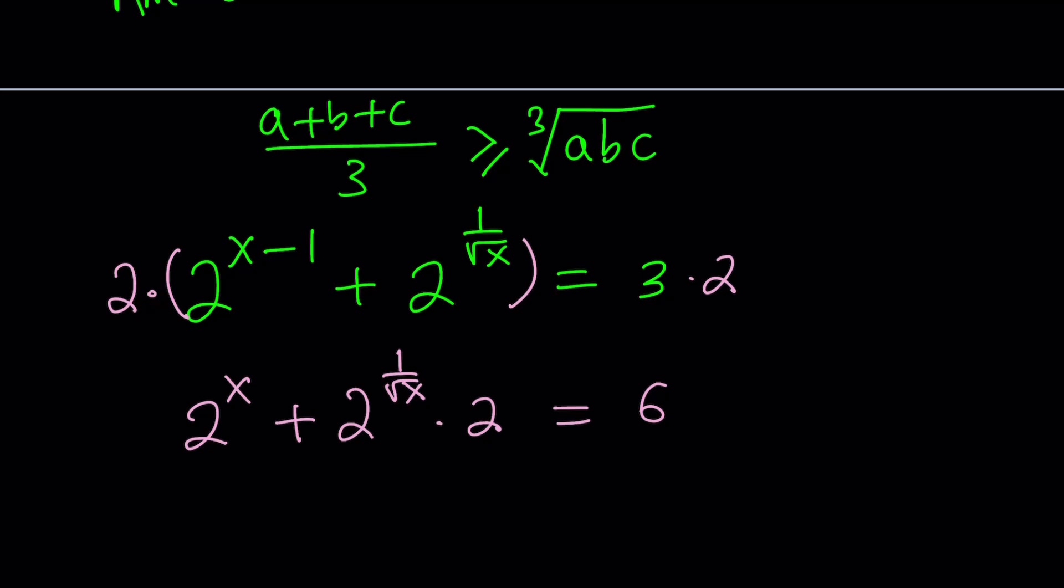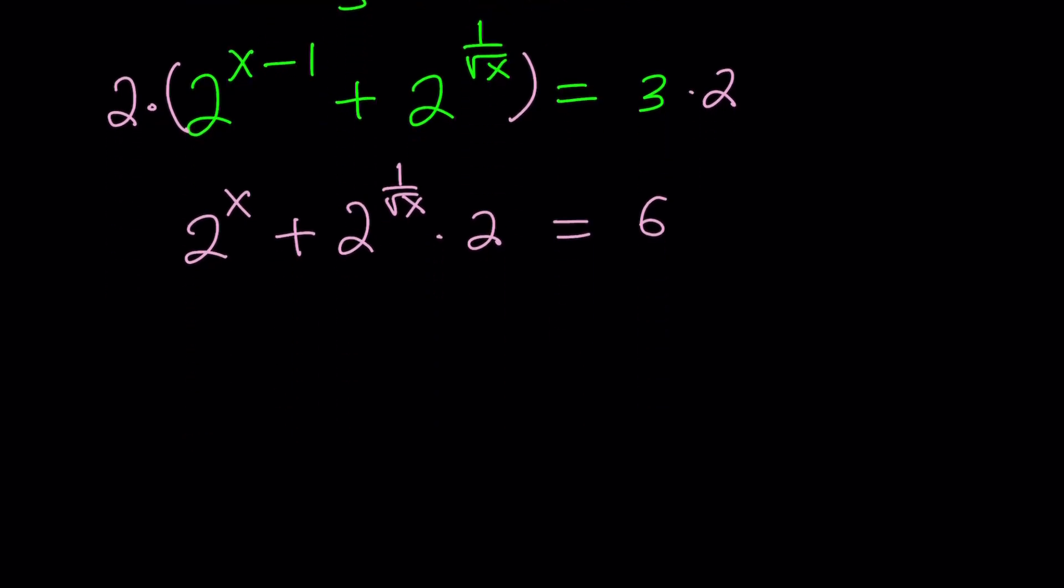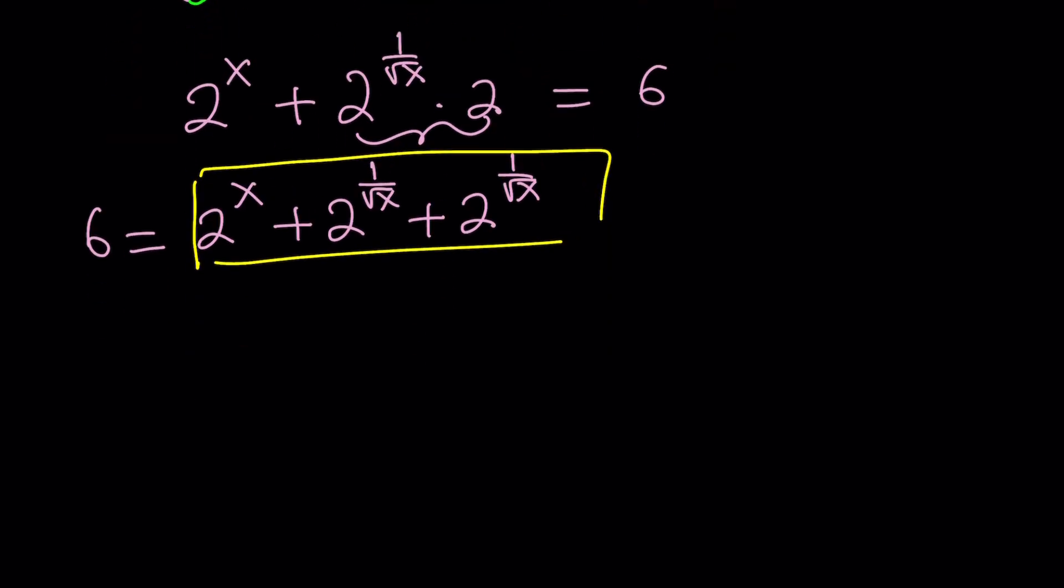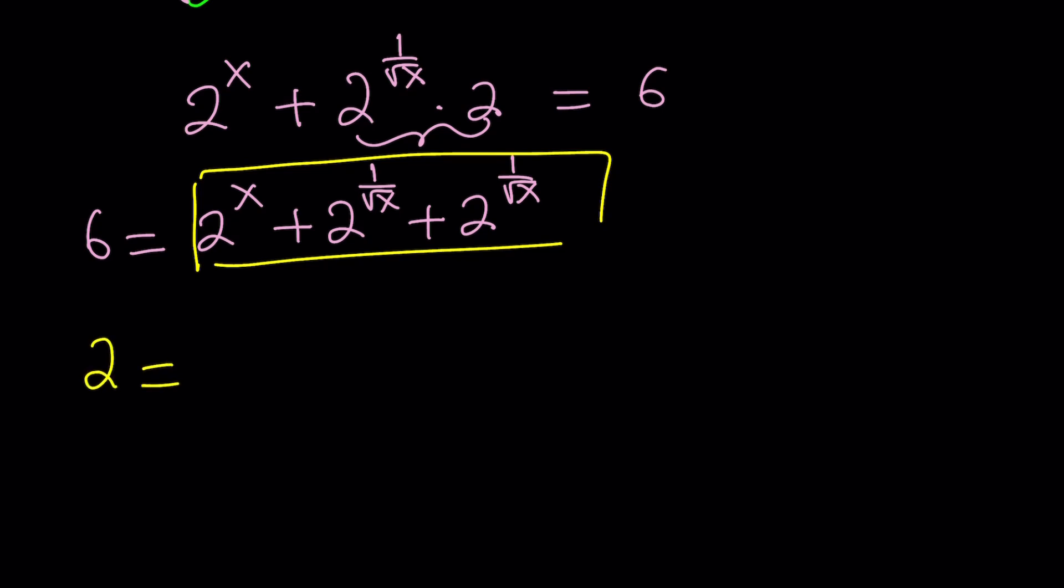Now, let's go ahead and apply it. Well, why did I say 3 numbers? There are only 2 numbers, right? Well, actually, no. We're going to split it up. Here's how we're going to handle it. 6 is equal to this expression, but I'm going to write it as, since we have 2 times something, we can write this as 2 to the power x plus 2 to the power 1 over square root of x plus the same thing. Instead of writing 2a, I just wrote a plus a. Now, we're going to go ahead and divide both sides by 3, because now, notice that we have 3 numbers. Now, we can go ahead and divide both sides by 3.